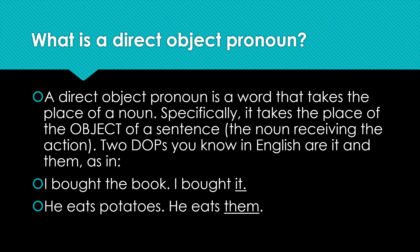Two DOPs you know in English are it and them. In the sentence I bought the book, the book is the object. I replace it with it — I bought it — and it is the DOP.